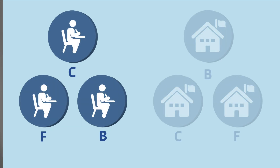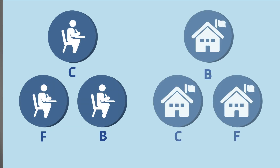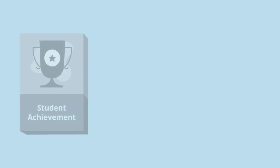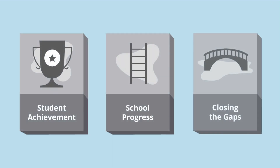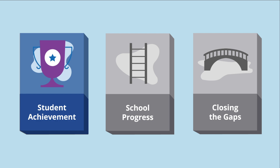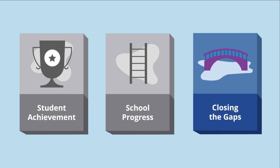we can use A-F ratings to identify ways to help schools improve over time. So what are the things that will determine the rating districts get? Schools are given an overall rating based on performance in three different areas or domains: student achievement, school progress, and closing the gaps.